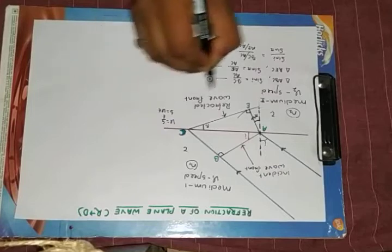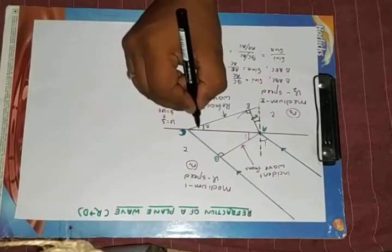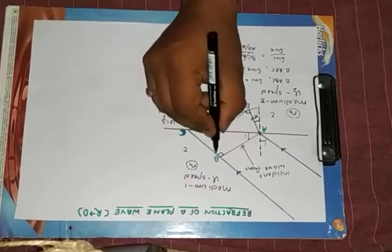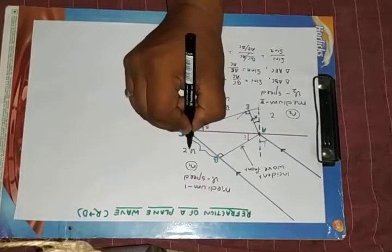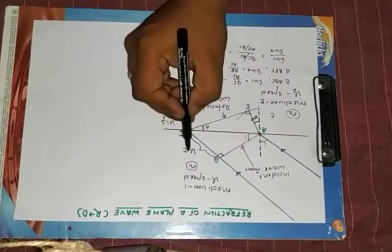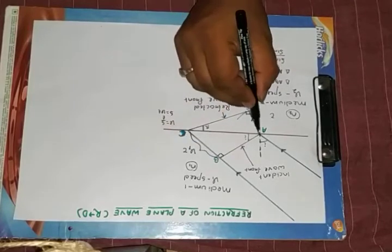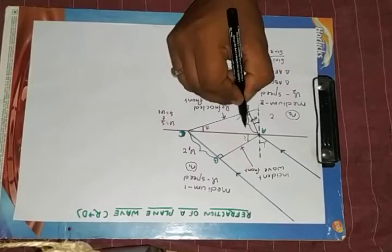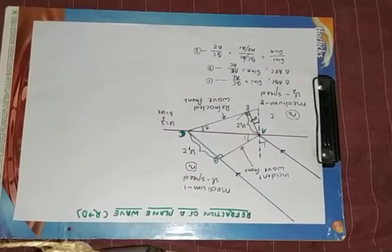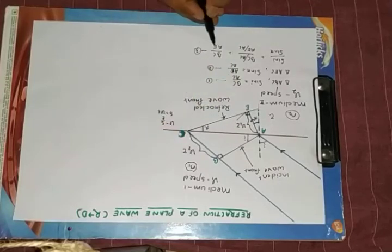distance is speed into time. So this BC, this distance I can write as v1 tau. Speed in this medium is v1. AE, speed here is v2, so v2 tau. So putting these values in equation 3,